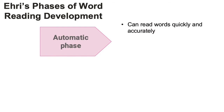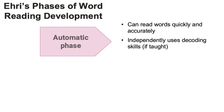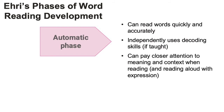The final phase in this model is the automatic phase. At this point, children can read most words quickly and accurately. Words that they don't recognize automatically, they can independently use their decoding skills to figure out, if they have been taught those skills. Because word reading has become mostly automatic at this phase, children can now start to pay closer attention to meaning and context when reading. They can also pay more attention to reading with expression and pacing when reading aloud.